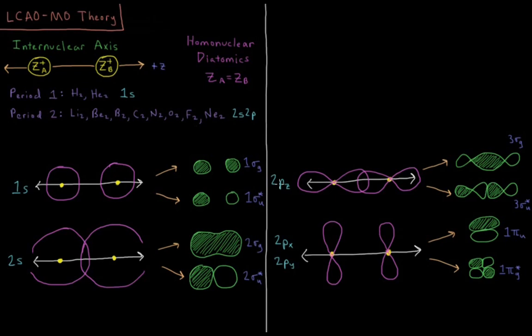Then we have the 2pz orbitals, which overlap head-on with each other, forming sigma orbitals as we look down the internuclear axis. 3σg bonding and 3σu star antibonding, node in the middle, density in the middle. We have symmetric with respect to inversion, g, anti-symmetric, u, and both being sigmas.